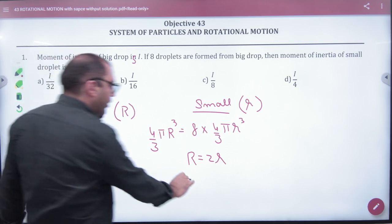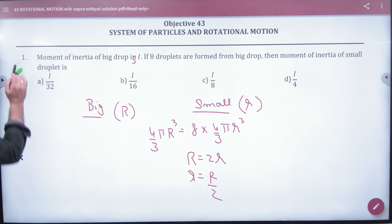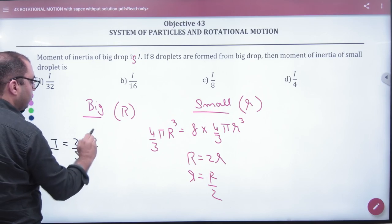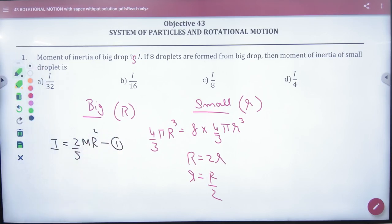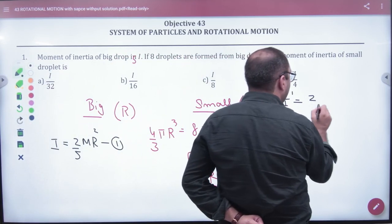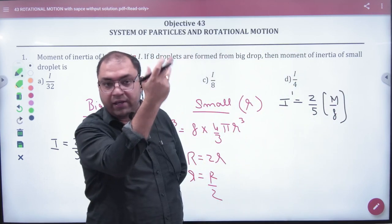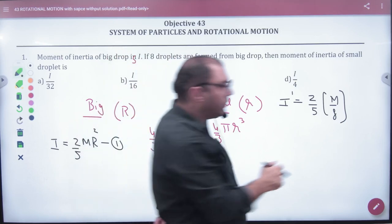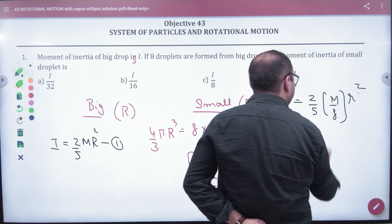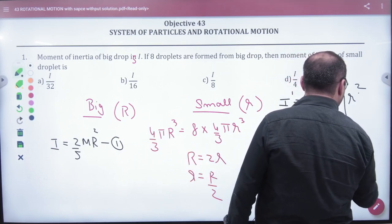What is the ratio and value of r, the small drop radius? The big drop's moment of inertia is 2/5 MR². Equation 1. The small drop's moment of inertia is 2/5, and we put mass as m/8. If the big drop has mass M, the small drop is M/8. The radius is r², small r². The small r value is capital R/2 squared.